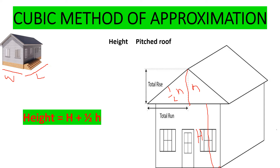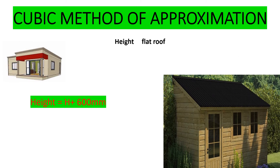When calculating the cubic content, we take the length, the width, and the height. For example, if your wall height H is 2800mm and you have a pitch rise of 500mm, you take half of 500 and add it to 2800 — so that is your total height. For the flat roof, we measure the height H of the building from the bottom, and then from the point where the roof starts we add 600 millimeters. So our height for a flat roof is H plus 600mm.